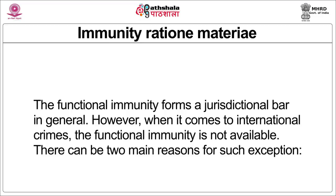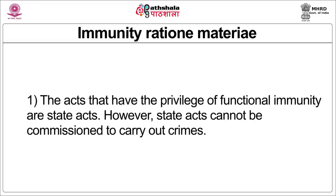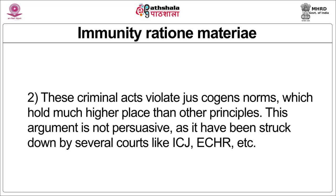However, when it comes to international crimes, functional immunity is not available. There are two main reasons for such an exception. Firstly, the acts which attract functional immunity are state acts; however, state acts cannot be commissioned to carry out crimes, which would mean that the state in fact endorses the carrying out of crimes — and this would be an absurdity. This argument has been struck down by several courts including the International Court of Justice and the European Court of Human Rights.